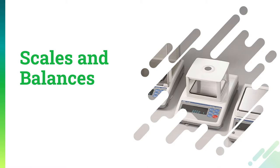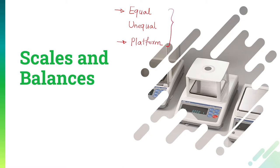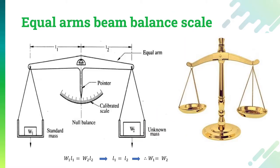There are a total of three kinds of scales and balances available. The very first is the equal arm balance. The second is the unequal arm balance. And the third will be known as the platform scale. These are the three major scales we are going to learn, and then we will understand the last scale based on the rack and pinion method. Let us start with the equal arm beam balance scale.